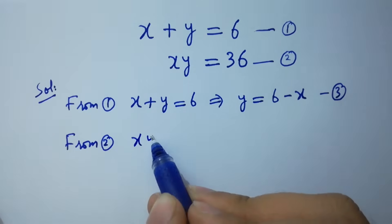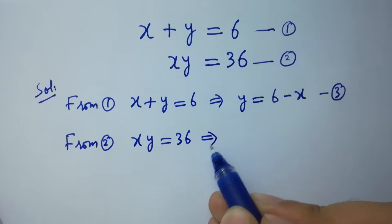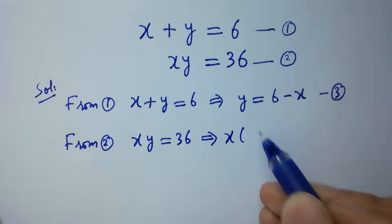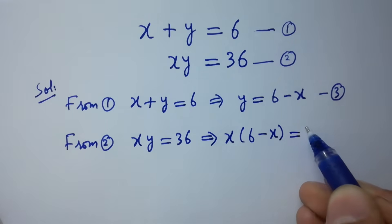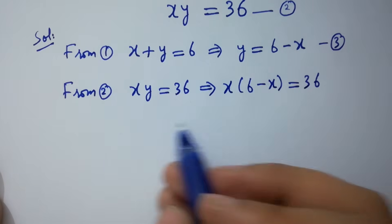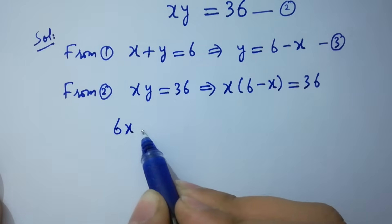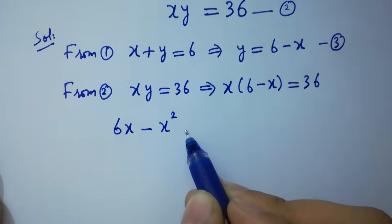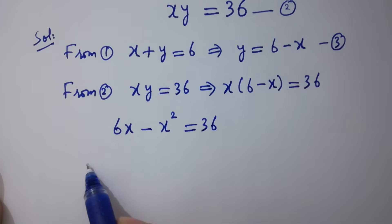From the second equation, x times y equals 36. Put the value of y. We have x times (6 minus x) equals 36. Simplifying, 6x minus x squared equals 36.